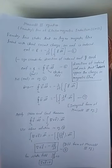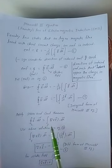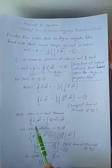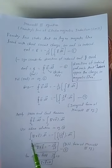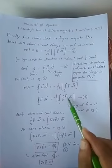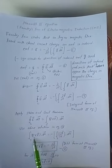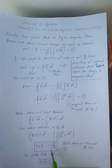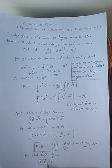Now we apply Stokes' theorem, which converts a line integral into a surface integral, or vice versa. The left-hand side is replaced by a surface integral term, giving del cross E dot dA equal to the surface integral on the right. Since both sides are surface integrals, we write del cross E equal to minus del B over del T. This is called the differential form of Maxwell's third equation. For static fields, when the magnetic field does not change with time, del cross E becomes zero.